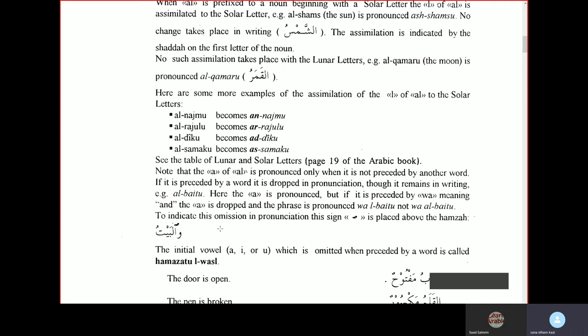To indicate this omission in pronunciation, since you're omitting the alif from the word, there's a sign that is placed above the hamza. This sign is placed above the hamza, and then we will make it as wal-baytu.